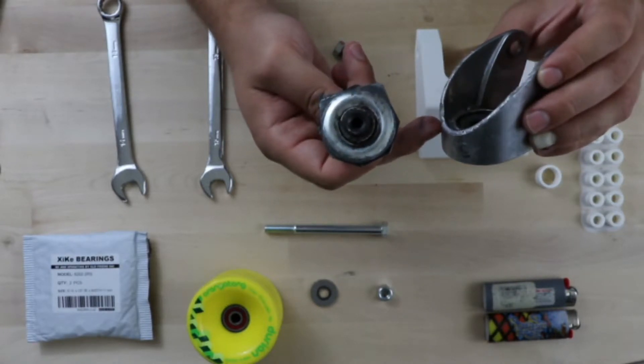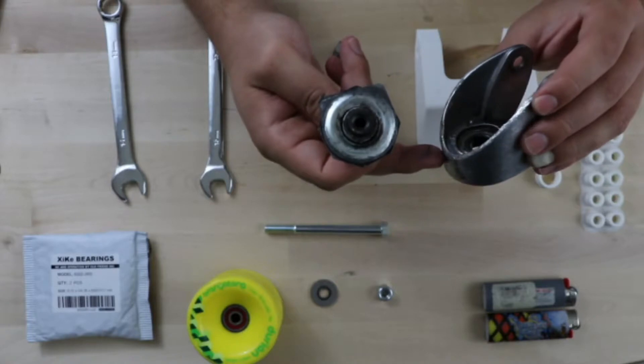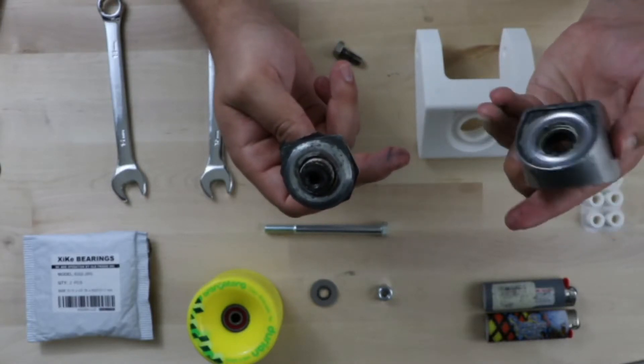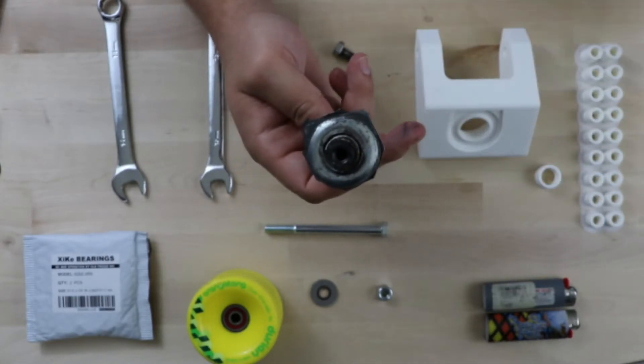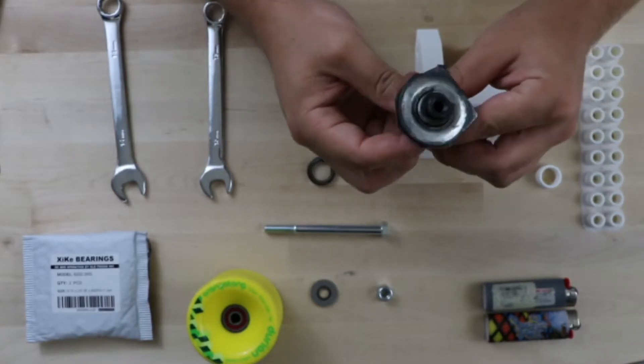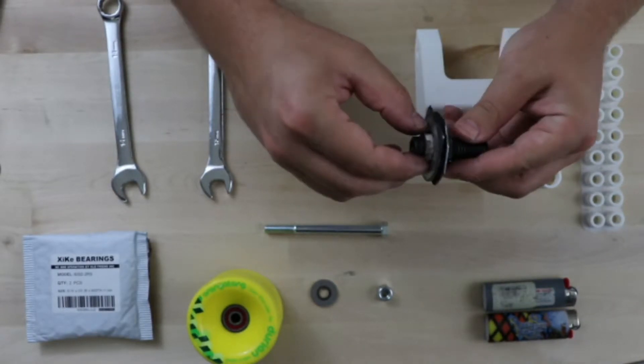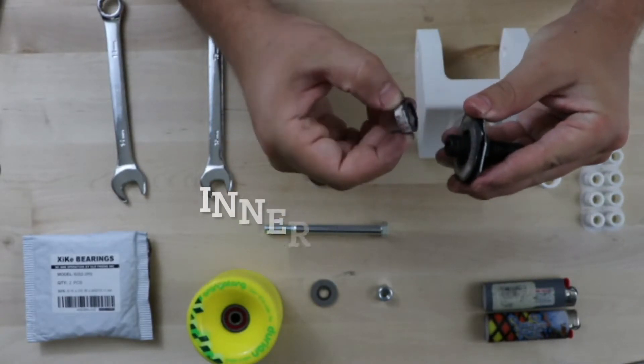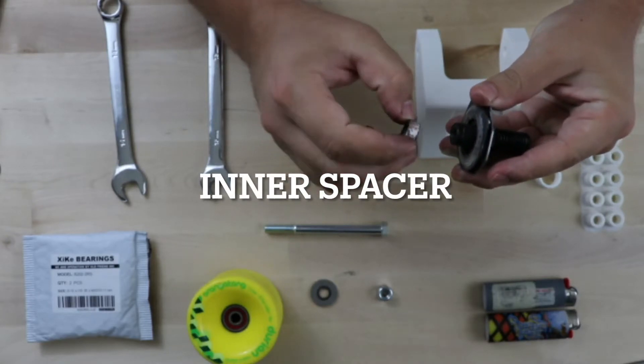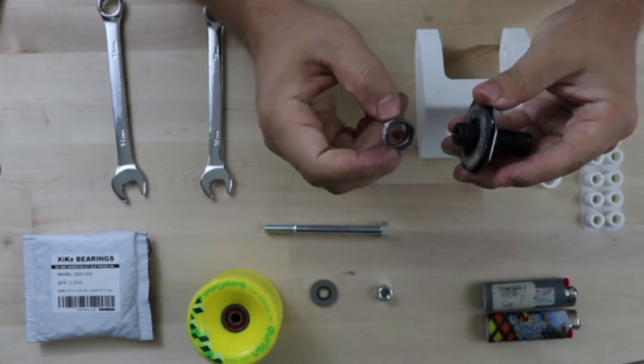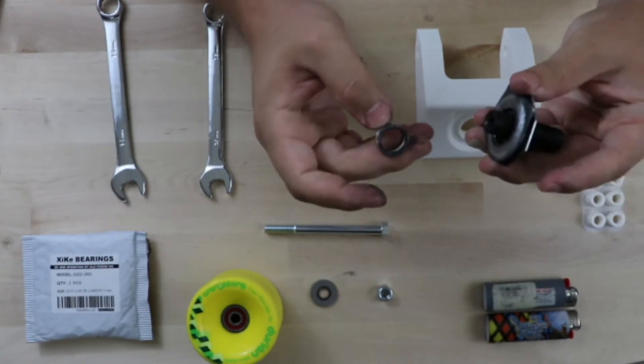Then you could basically throw this out if you're lucky enough. Maybe you could take this bearing out, but I wouldn't suggest it because it would require you to cut this open. But if you're bold enough to do it then be my guest. All right, so these are the main parts we need.